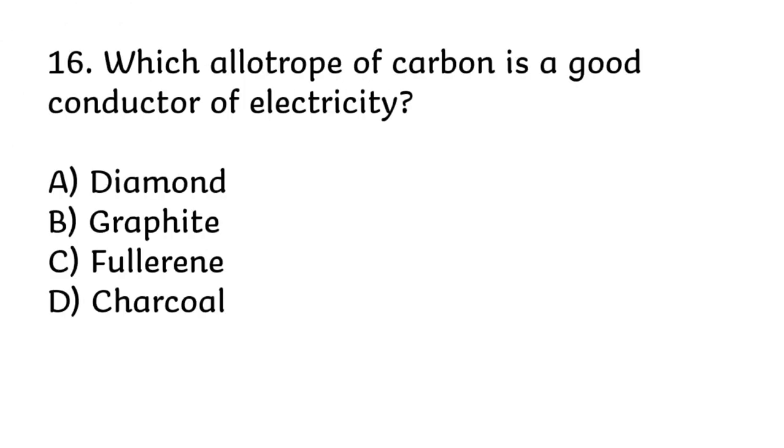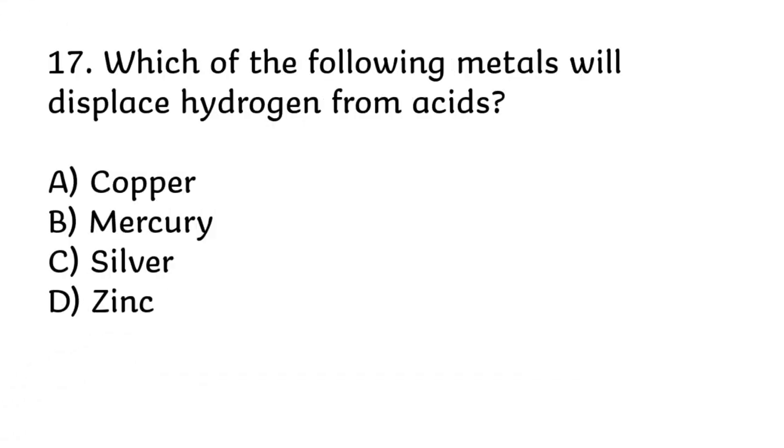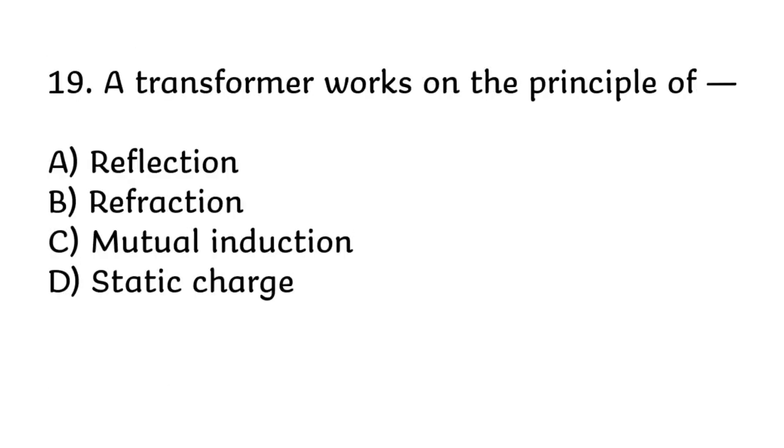Which allotrope of carbon is a good conductor of electricity? Correct answer is B, graphite. Which of the following metals will displace hydrogen from acids? Correct answer is D, zinc. A transformer works on the principle of? Correct answer is C, mutual induction.